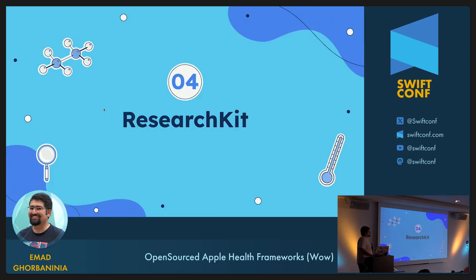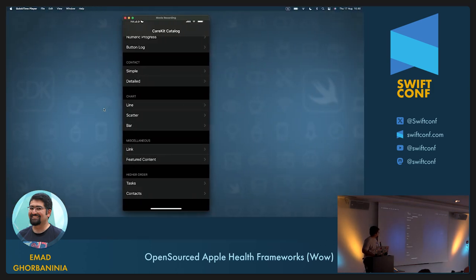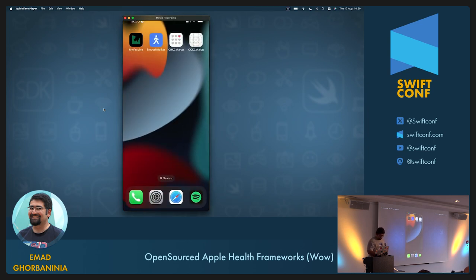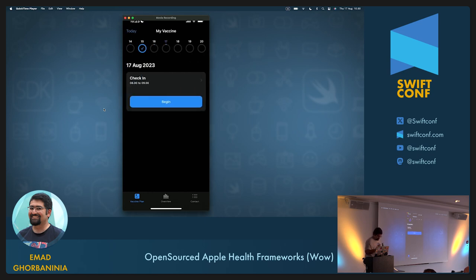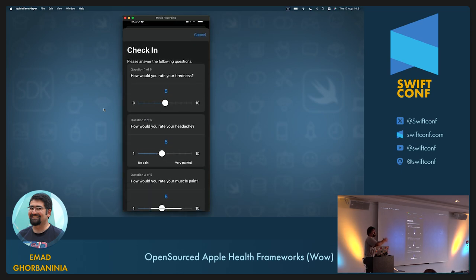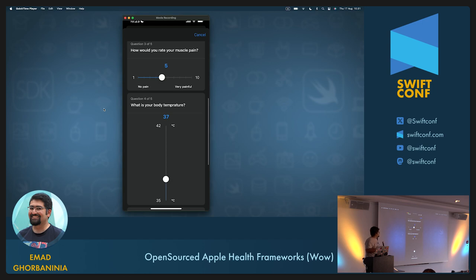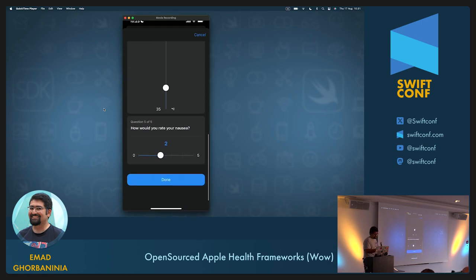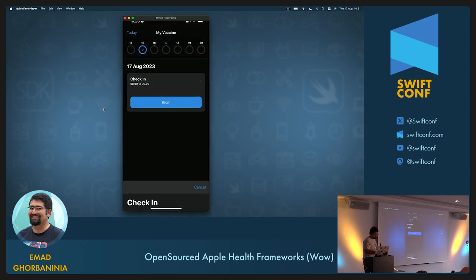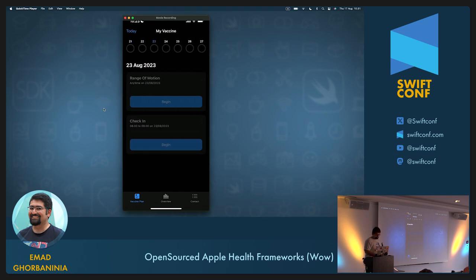ResearchKit. I'll go back to my app to grab your attention again. There is a calendar up there with different tasks — and those are all CareKit. When I press begin, this is ResearchKit. All these surveys come from ResearchKit. You have different types of ORK tasks, which are actual ResearchKit tasks. But behind this result page, all these come from CareKit — scheduling different tasks after a week or two weeks is CareKit.